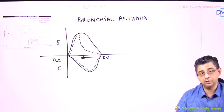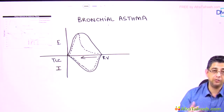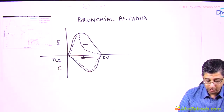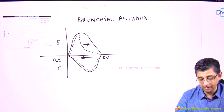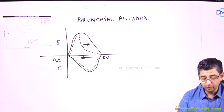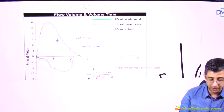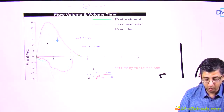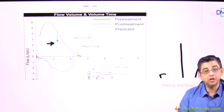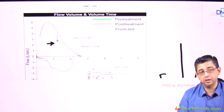You will now give salbutamol to the patient, and if you repeat the test after 10 or 15 minutes, you will notice that this concavity will become significantly reduced. The computer can calculate and tell you in percentage how much improvement has occurred in the expiratory flow rate. This is precisely represented in this printout of an actual patient — the green curve is the pre-treatment recording and the red is the post-treatment recording. There is a scooped-out concavity in the expiration on the flow-volume curve, but it has substantially improved after giving salbutamol, a short-acting beta-2 agonist.